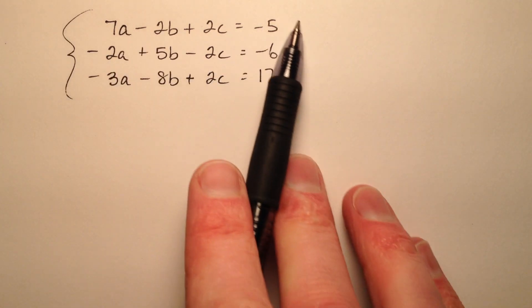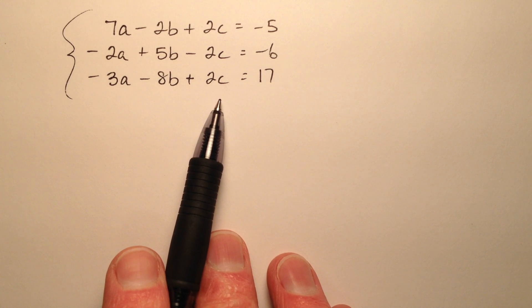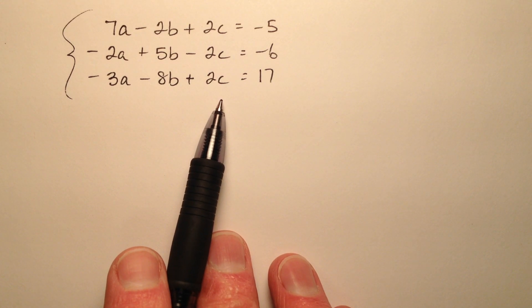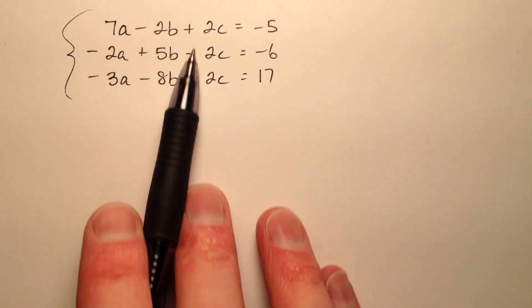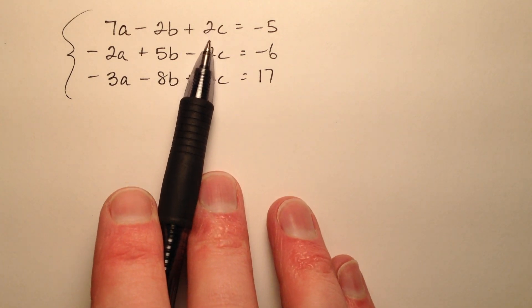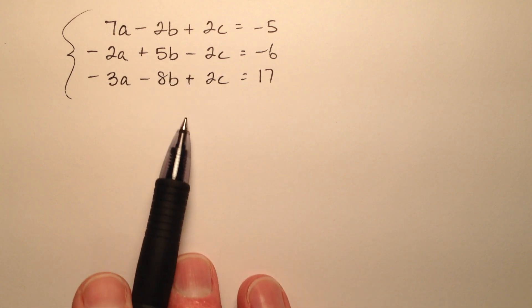In this example, we're going to solve this system with three equations and three unknown values, and the first step we're going to use is elimination. It seems to me like these c's are going to be a great candidate for elimination because all the coefficients are two, and two of them are positive and one of them is negative.